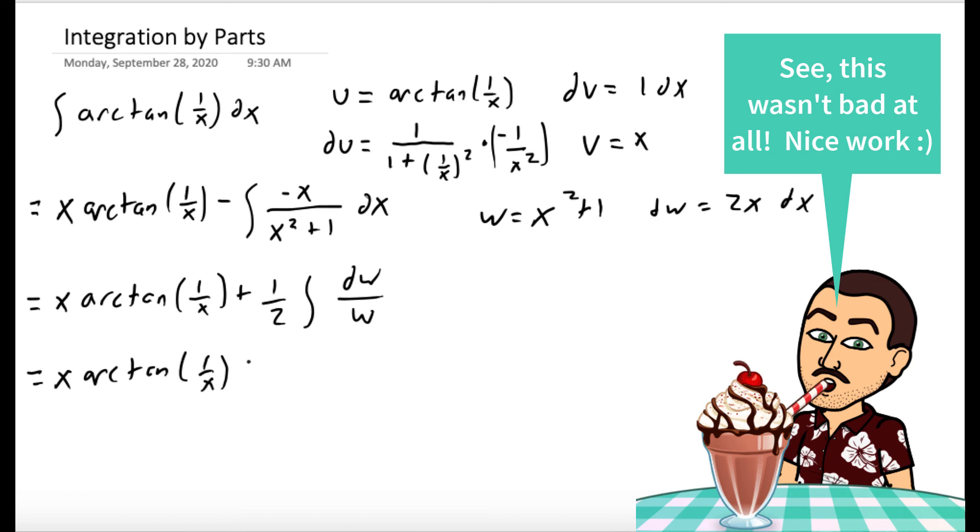So we have x arc tan of 1 over x plus 1 half ln of the absolute value of w plus c. And we started with x, so we better end with x. So we have x arc tan of 1 over x plus 1 half the natural log of the absolute value of x squared plus 1 plus c.